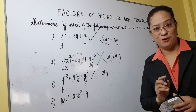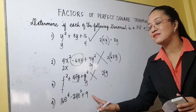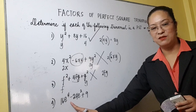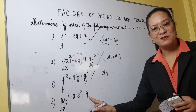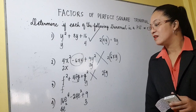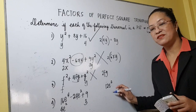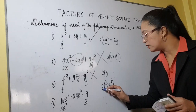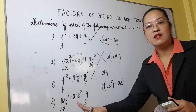Let us have number 4: 16e to the 4th minus 24e squared plus 9. What is the square root of the first term, 16e to the 4th? The square root of 16 is 4, and e to the 4th is e squared — so the square root is 4e squared. What is the square root of 9? That is 3. Let us multiply the square roots: 4e squared times 3 is 12e squared. Let us double the product: 2 times 12e squared is 24e squared. Is it the same with your middle term? Yes, it is. So this is a perfect square trinomial.